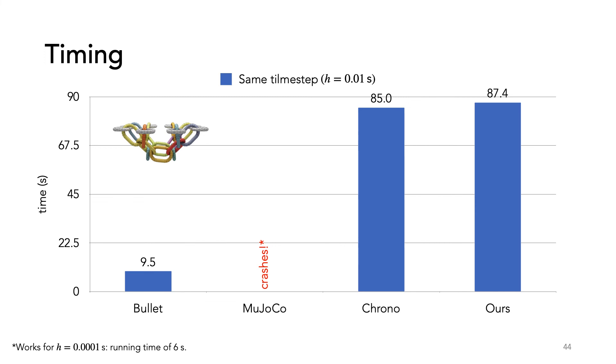While our method is slower, this is not the entire picture, because for other methods getting feasible results depends on the parameter choices. For example, we were unable to find a set of parameters that avoids minor intersections in Bullet and MuJoCo crashes for large time steps, but at a time step of 10 to the negative 4 seconds, it works and takes only 6 seconds.